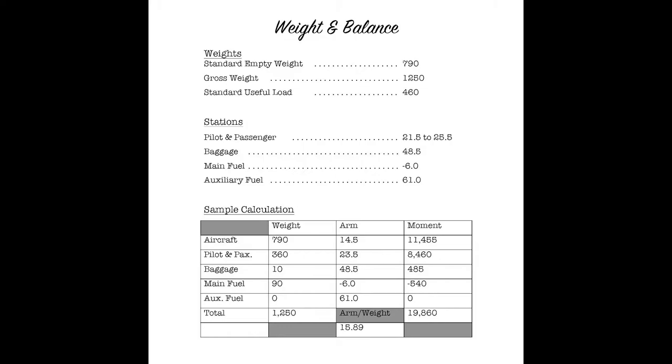In this example, 790 pounds empty plus 360 pounds of people plus 10 pounds of baggage plus 90 pounds of fuel is right at our gross weight of 1,250 pounds. If we add up all of these moments - 11,455 plus 8,460 plus 485 minus 540 - that gives us 19,860.